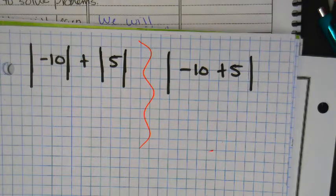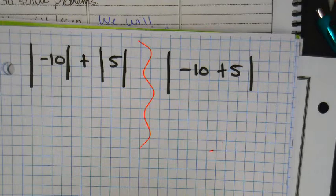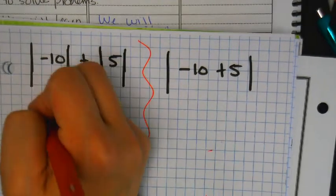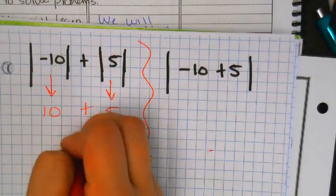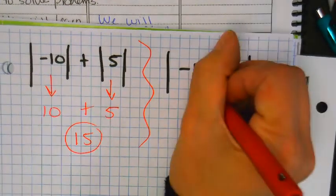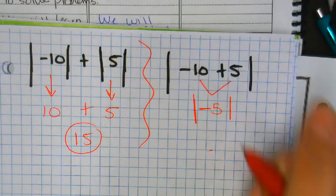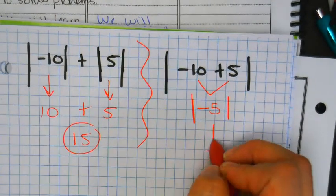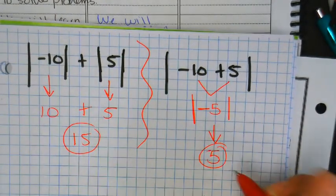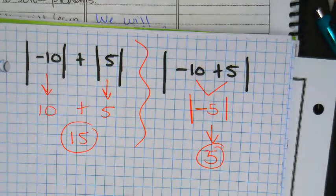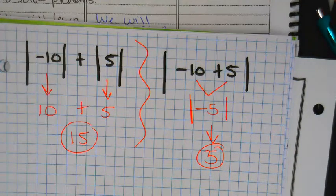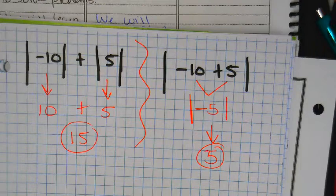Okay, what's the first answer, guys? Fifteen. Second answer? Five. Very good. This gives you ten plus this gives you five, so that's fifteen. Here I get to do this math first, so I get negative five. In the bars, the absolute value of negative five is five.